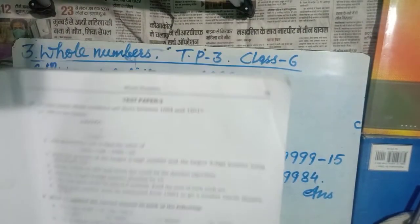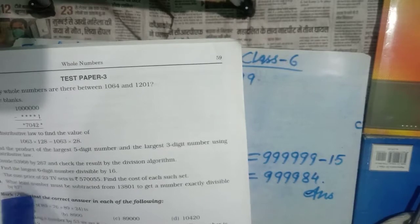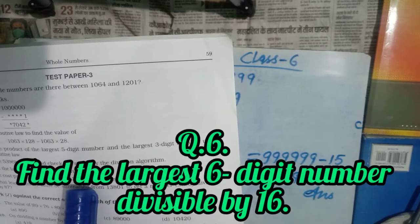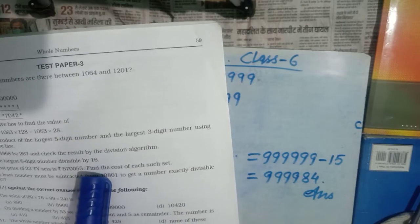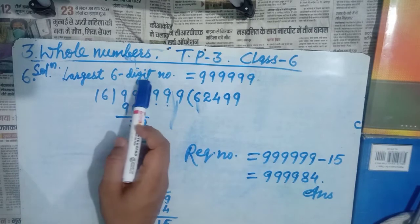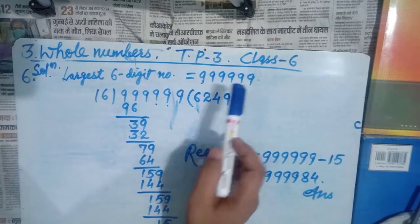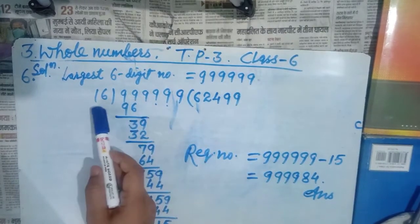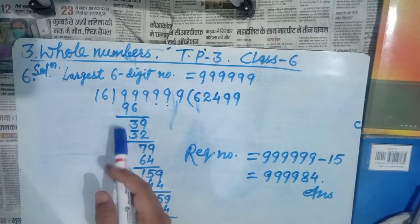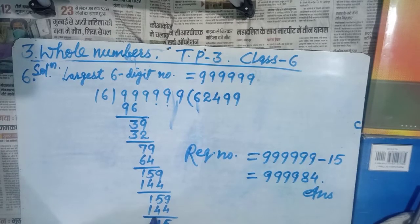Question number 6 says: find the largest 6-digit number divisible by 16. First, write down the largest 6-digit number, which is 999999. Now divide this number by 16. After dividing, we get a remainder of 15. That means the number is not exactly divisible by 16.